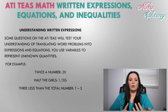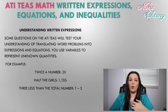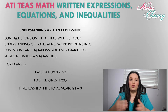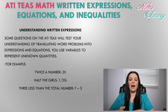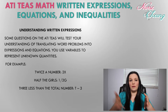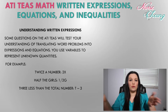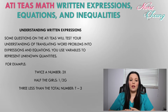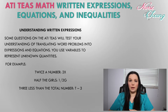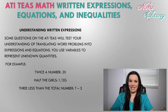You will use variables to represent unknown quantities. For example: two times a number is 2x; half the girls is 1 divided by 2g; and 3 less than the total number is t minus 3.